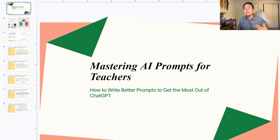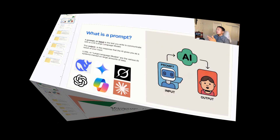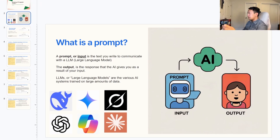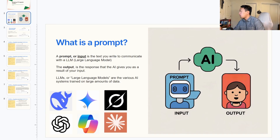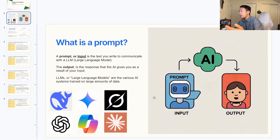Before we dive into prompting, let's quickly define a couple of key AI terms. A prompt or an input is text that you write to communicate with an LLM, which is a large language model. And the output is the response that the AI gives you as a result of your input. LLMs are various systems trained on large amounts of data. We're going to be using ChatGPT today just as our demo, but you have quite a few options.